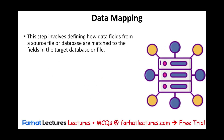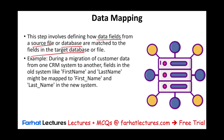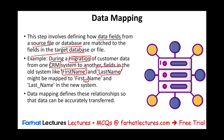Data mapping. This step involves defining how data fields from one source file or database are matched to the fields in the target database or file — simply put, transferring data from one database to another. For example, if you are migrating customer data from one CRM system to another, fields in the old system like "firstname" and "lastname" might be mapped to "first_name" and "last_name" in the new system. Data mapping defines these relationships so the data can be accurately transferred.